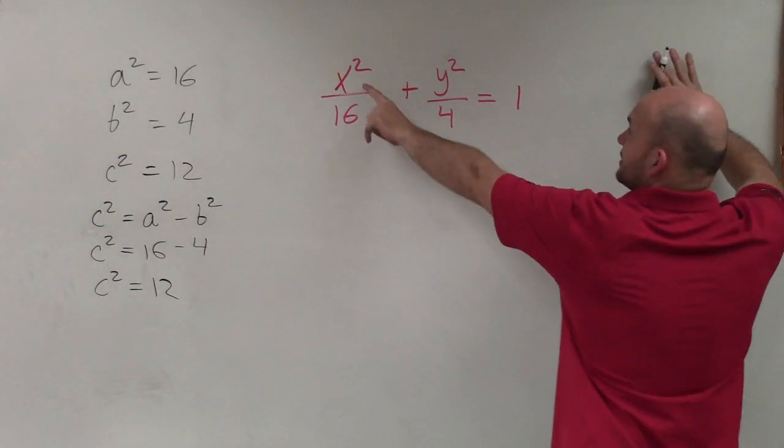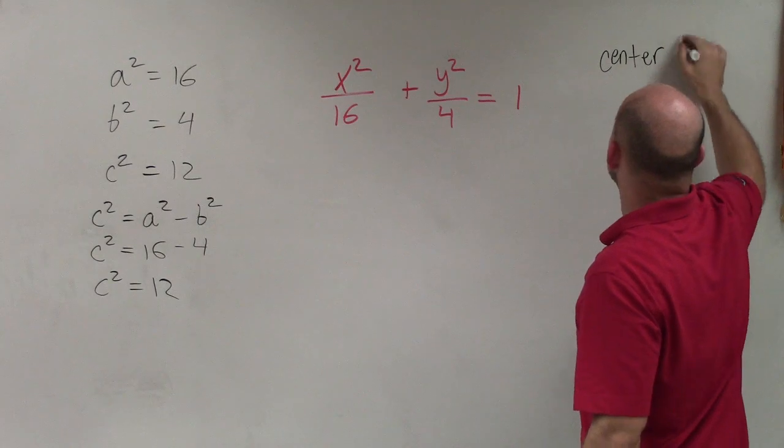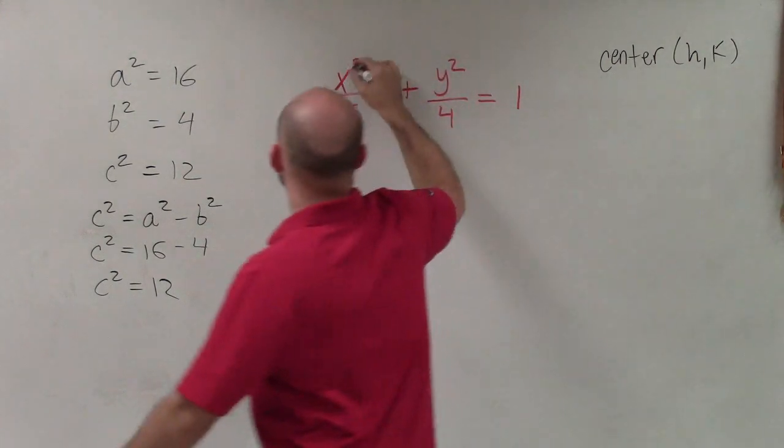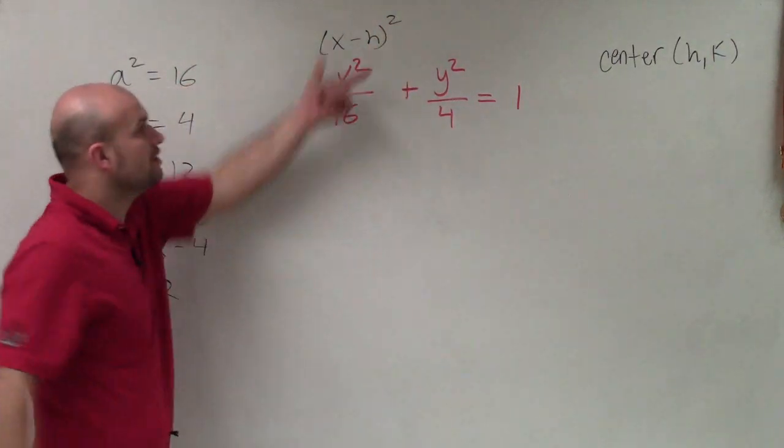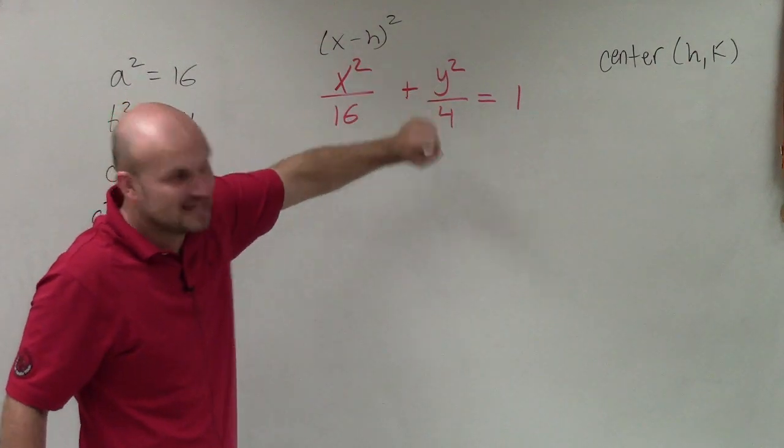Now, what we notice here is the center is in the form of h comma k. And usually what we'll have, instead of having x squared, we'll have like x minus h squared. Well, as you notice, there is no h, it's just x squared. So therefore, h is 0 and k is 0.